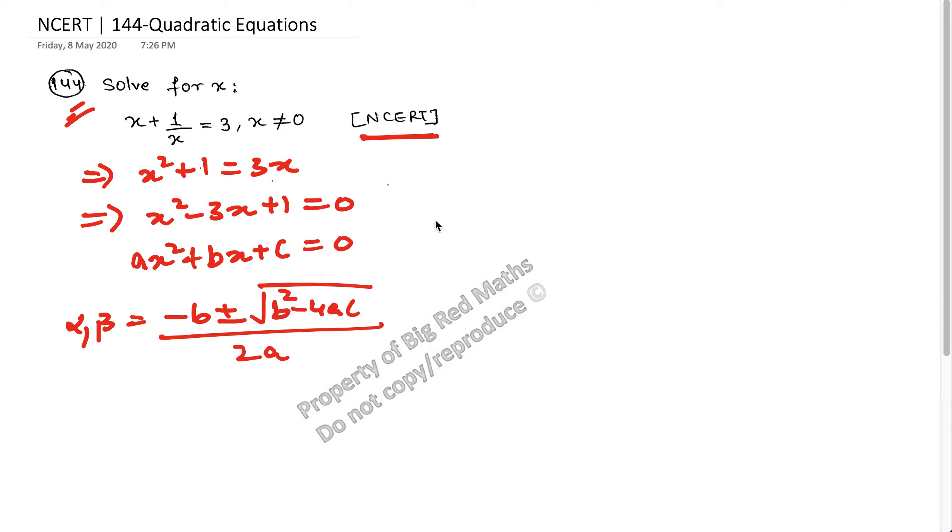This is our standard formula. Now let's compare the coefficients in this equation. Comparing them, we get that the value of a is 1, the value of b is minus 3, and the value of c is 1.